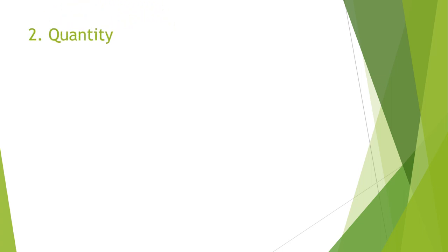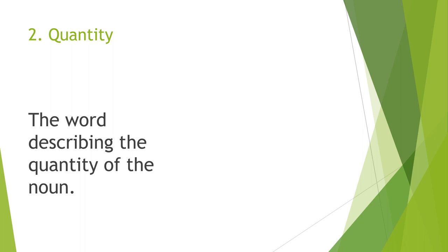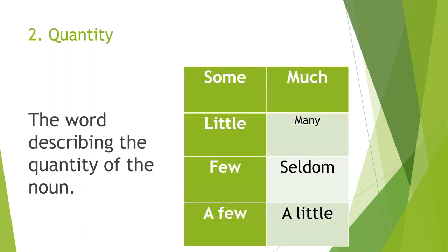The very next kind is Quantity. The word describing the quantity of the noun comes under the category of quantity adjectives. Some illustrations are: some, much, little, many, few, seldom, a few, a little. In the upcoming lectures there are certain rules that will be discussed, and all these things will be made clear.